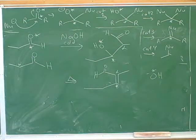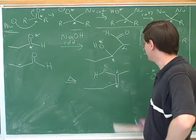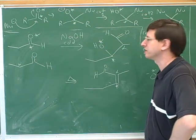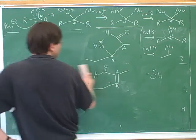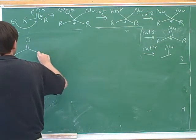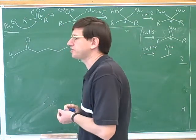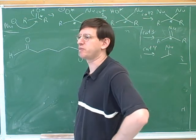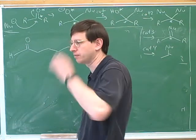You need to keep practicing the aldol reaction until you can do it both with the mechanism and without the mechanism. Putting in the asterisk and the alpha symbol helps us keep our bearings when doing this, and following the patterns helps as well. You also have to be able to do the retroaldol condensation — both with the mechanism and without the mechanism. Putting in the alpha and the asterisk can be very helpful in those cases.